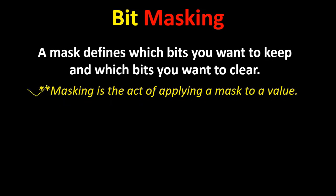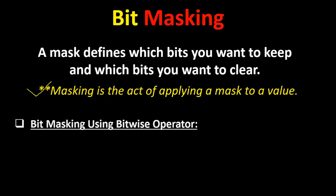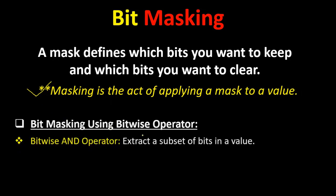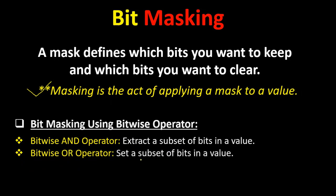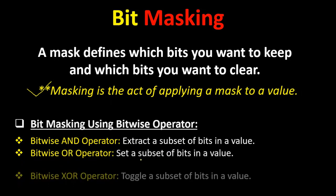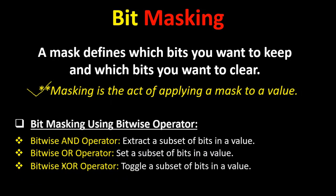This is the formal definition of mask. We can apply a mask to a value to do something. We can do bit masking using bitwise operators. If we use the bitwise AND operator, then we can extract a subset of bits in a value. If we use the bitwise OR operator, then we can set a subset of bits in a value. If we do masking using the bitwise XOR operator, then we can toggle a subset of bits in a value. This is the concept of bit masking.